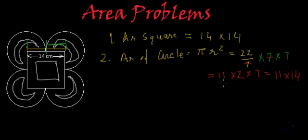Why I have written 22 as 11 multiplied by 2? Because I wanted to achieve this 14. Since we have 14 in the area of the square and if I get a 14 here, the addition of the areas will become easy for me. So the area of one circle is 11 multiplied by 14.